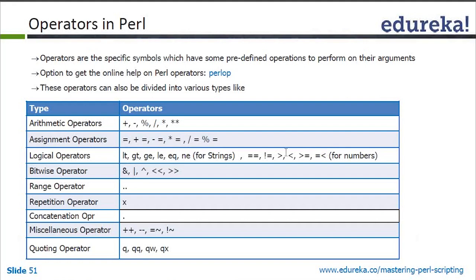In Perl, there is a difference in how we use comparison operators. Greater than and less than symbols work only for numbers. If we are operating on numbers like 1 and 2 or scalar values that are numbers, we use the standard operators. But if working on strings, we must use LT, GT (greater than), GE (greater than or equal), LE (less than or equal), EQ (equal to), and NE (not equal to) for strings. This is one important way Perl differs.